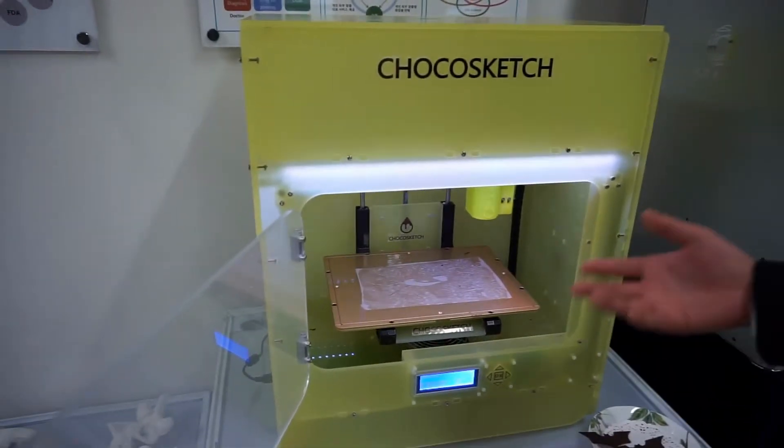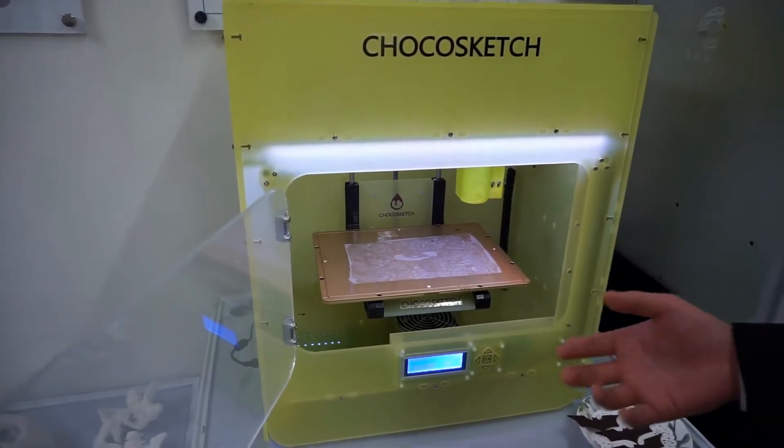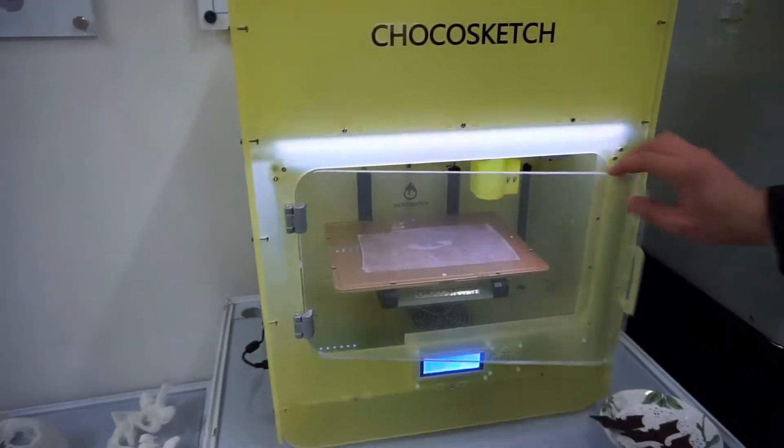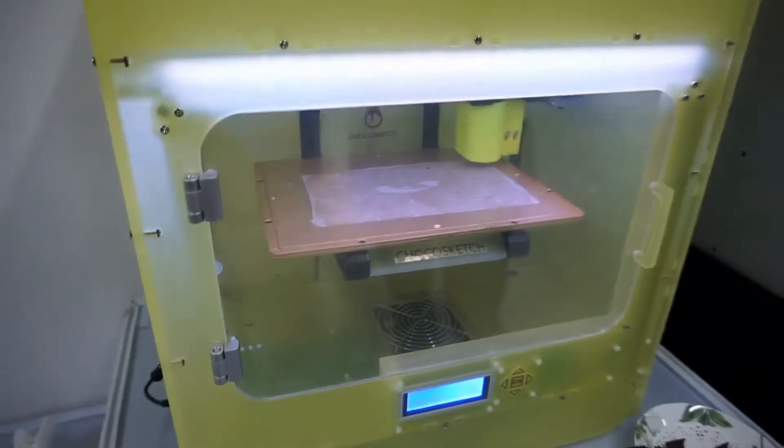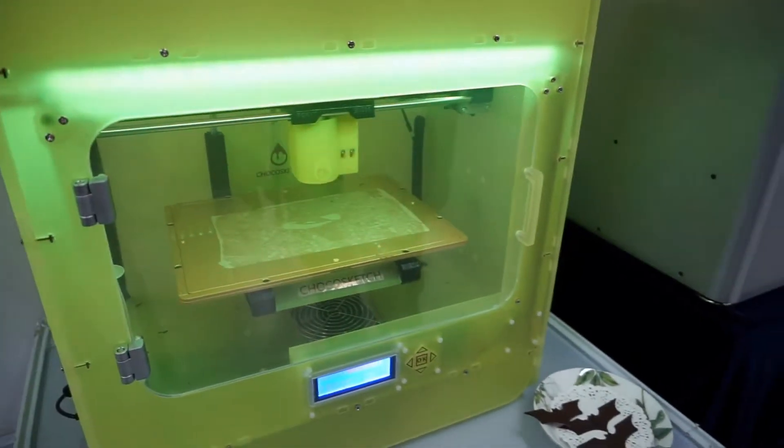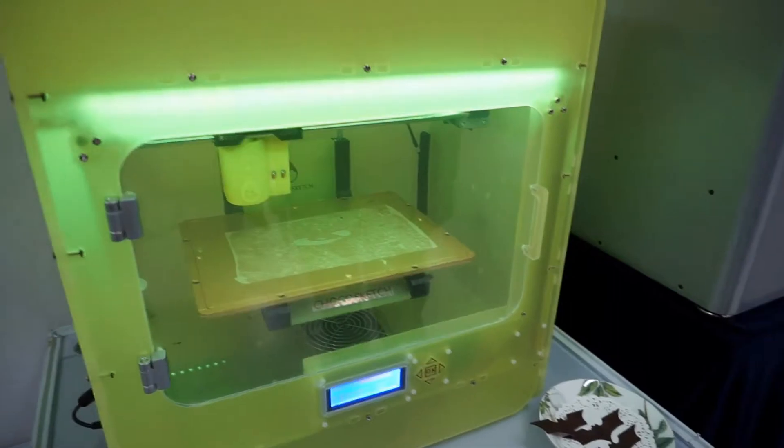3D chocolate prints are possible by controlling the temperature. For that, the ChocoSketch has a fan that forces air circulation right in the bottom. There is no active cooling system, although the proper air circulation does the job to set the chocolate, also avoiding clogging the nozzle.